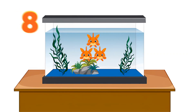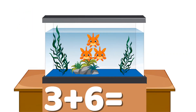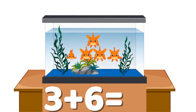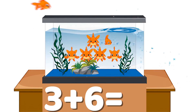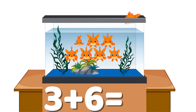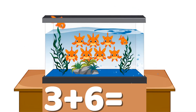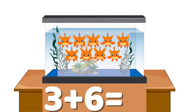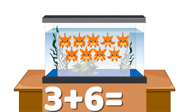Example number eight: three plus six. Three fish are in the tank. Six more fish swim in. Let's count them: one, two, three, four, five, six, seven, eight, nine. Three plus six equals nine.